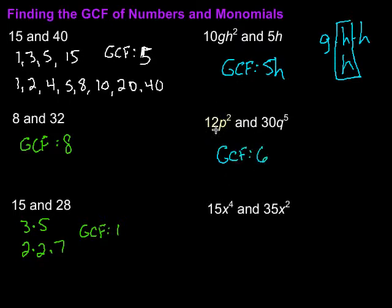Then I look at my variables. Here we've got P squared, here we've got Q to the 5th. What do they both have? Well, they both don't have anything in common. I've got P's there, Q's there. Nothing in common. So my GCF in this case is just going to be 6.